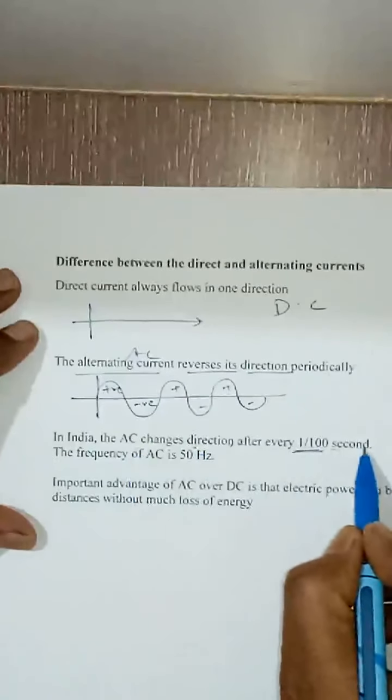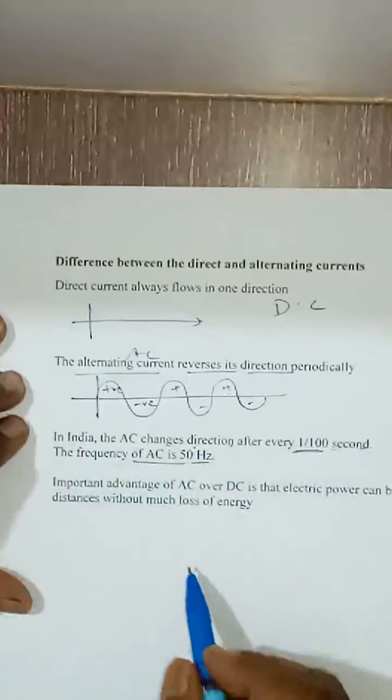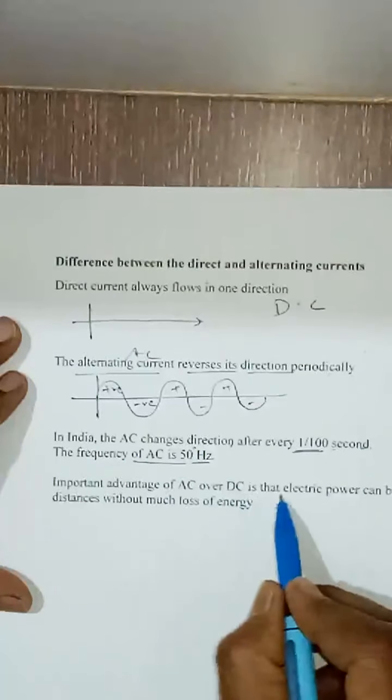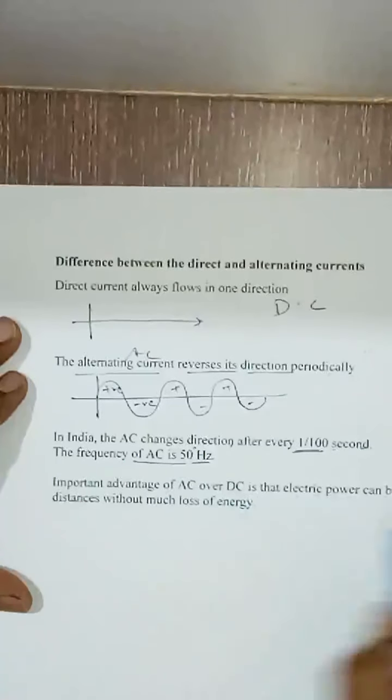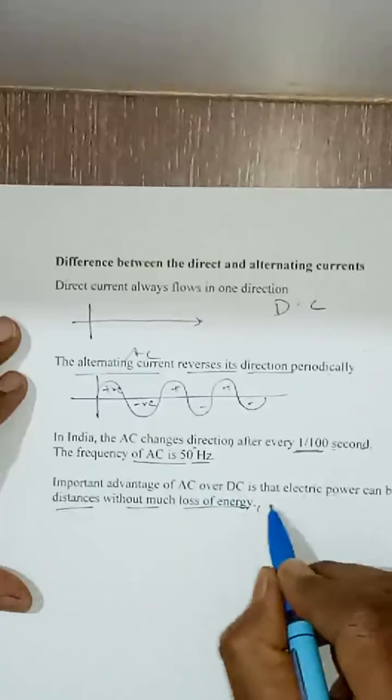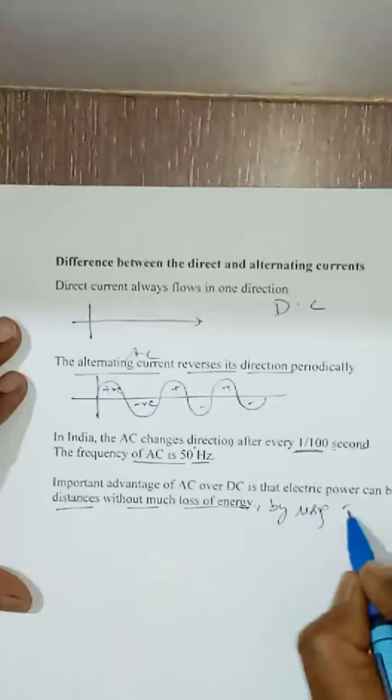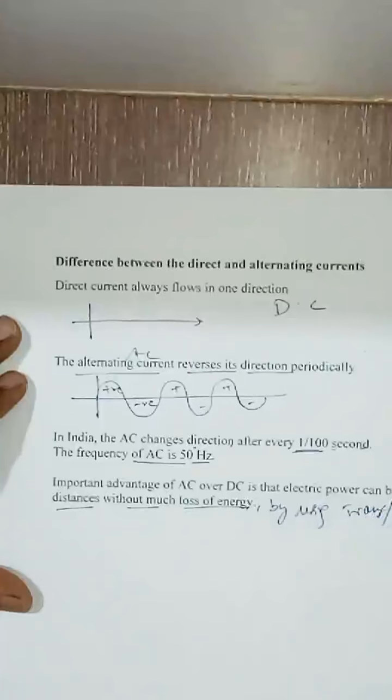In India, AC changes direction after every 1/100 seconds. The frequency of AC in India is 50 Hz. Important advantage of AC over DC is that electric power can be transmitted over long distances without much loss of energy by using transformers. Thank you.